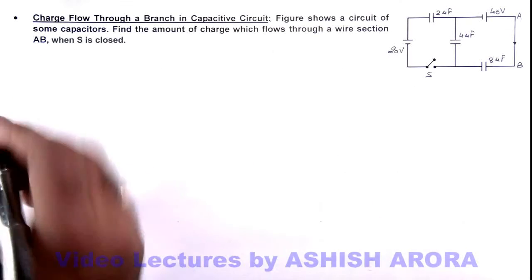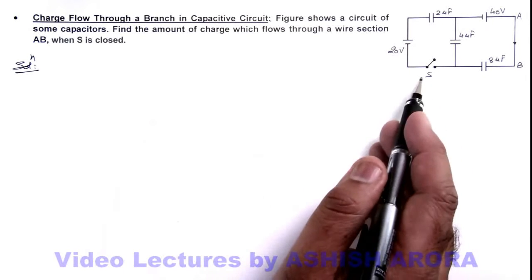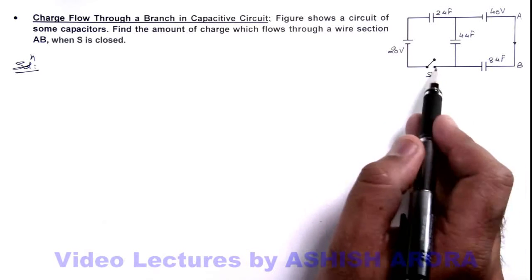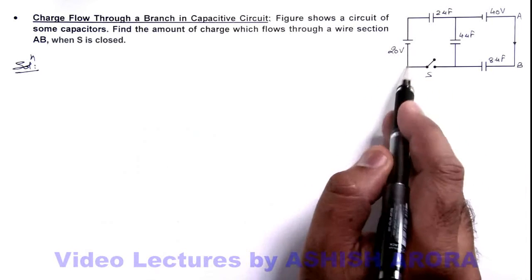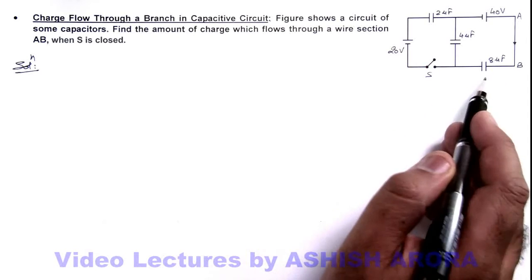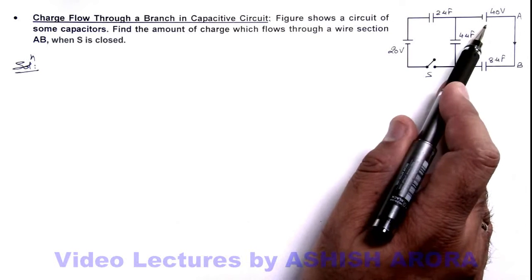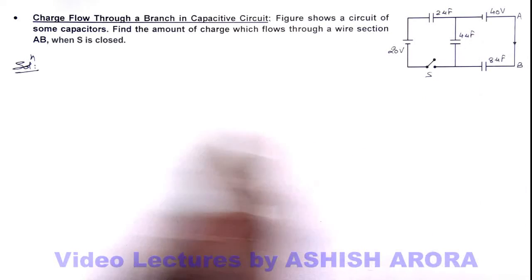In this situation, we can first calculate the charges on capacitors before closing the switch. When the switch is open, this part of the circuit is isolated from the right part, so these two capacitors can be taken in series, which are connected across a 40-volt battery.